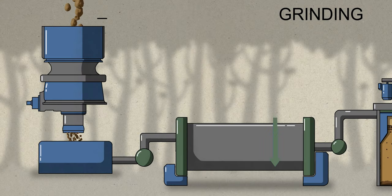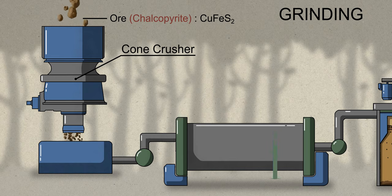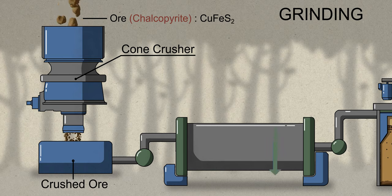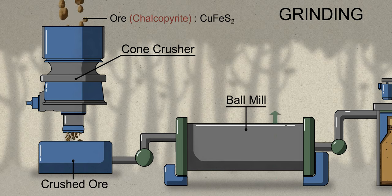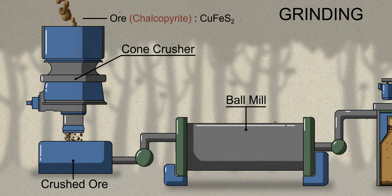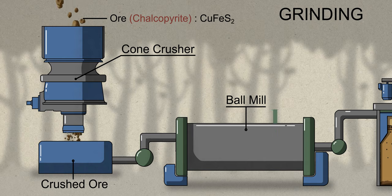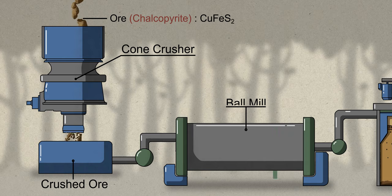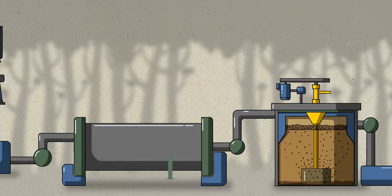Step 2 is grinding. In grinding, the ore is crushed in a series of cone crushers to break the large rocks of ore into smaller pieces, and the crushed ore is then ground even smaller by using ball mills. In ball mills, the ore is mixed with water, which converts the powdered ore into slurry. This slurry is a mix of valuable copper, waste rock called gangue, and other impurities.